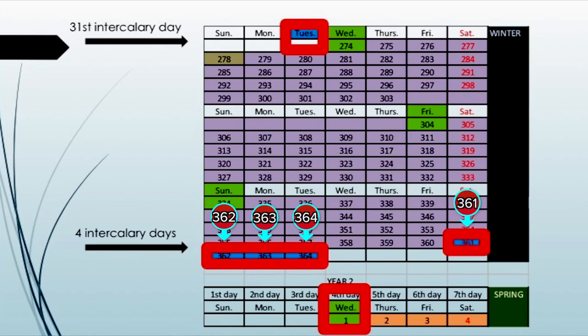Why do we add four intercalary days to the base number 360? In order to get back to the fourth day of the week, Wednesday. That is the purpose of the intercalary days. Day 361 is on Shabbat, 362 is on the first day of the week, 363 is the second day of the week, 364 is on the third day of the week — making year two begin once again on the fourth day of the week. This is why we have intercalary days: to keep your years and your weeks within the years from ever-shifting days.